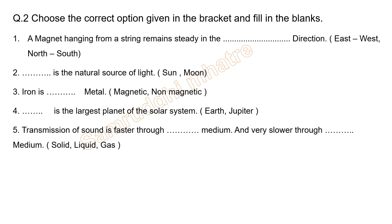Second question: choose the correct option and fill in the blanks. First, a magnet hanging from a string remains steady in which direction — east-west or north-south? A magnet always settles in the north-south direction. So the answer is north-south.